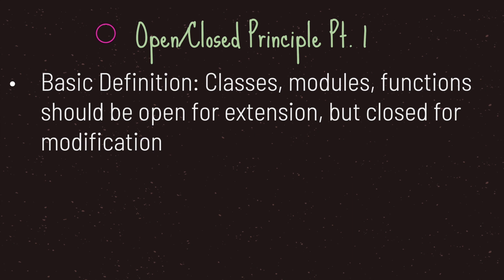However, in other programming languages you could also use something called an interface — this is also called polymorphism open close principle. However, that is out of scope for this episode. Even though we may confuse the word extension in this sentence to mean inheritance, what it really means is that it should be open for modification of behavior.